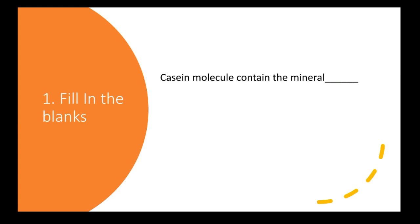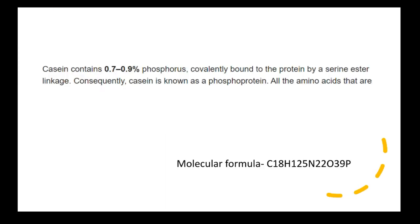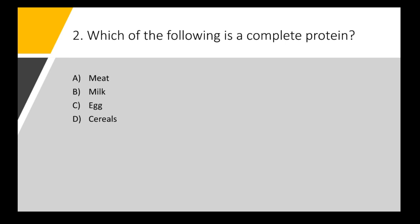Question one: fill in the blank — the casein molecule contains the mineral ___. In the molecular structure of casein, one mineral is present in quite significant amount. The mineral present in the casein molecule is phosphorus. Casein contains nearly 0.7 to 0.9 percent of phosphorus, and for that reason it is also known as phosphoprotein. You can see phosphorus in its molecular formula.